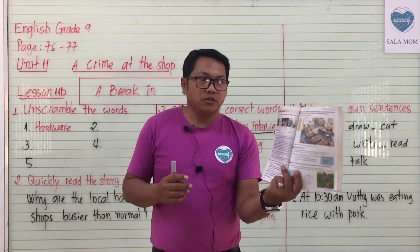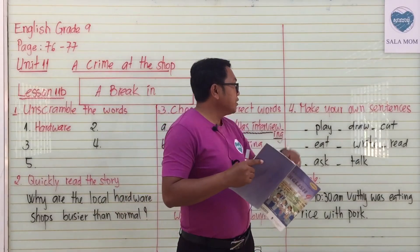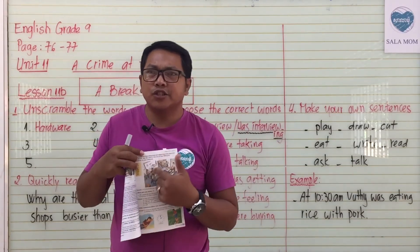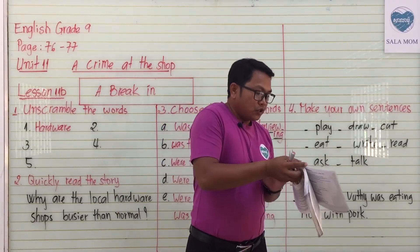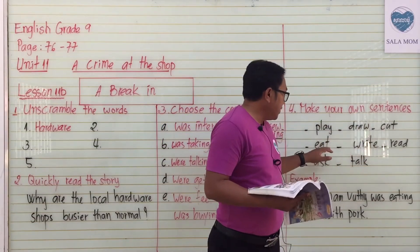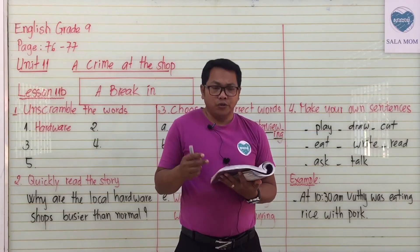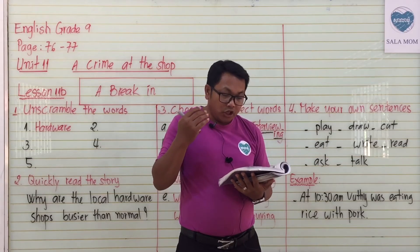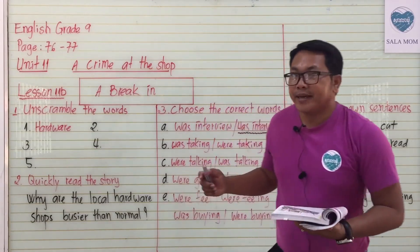Then we move to part number four. Look at the pictures in your book on pages 76 and 77. Number four: make your own sentences. Look at the classroom — it looks like a play area where students can do anything. Look at the words you'll use: play, draw, cut, eat, write, read, and talk. Look at the people in the classroom — a student was cutting papers, a girl or boy speaking on the phone.